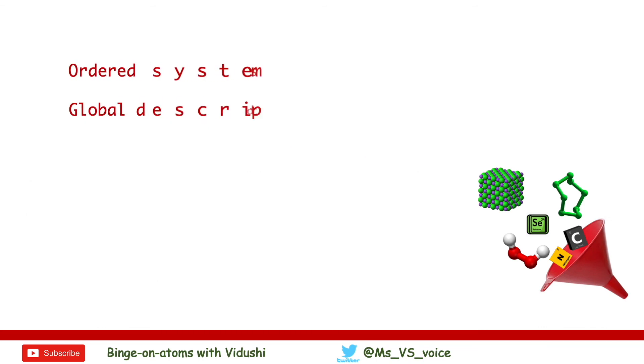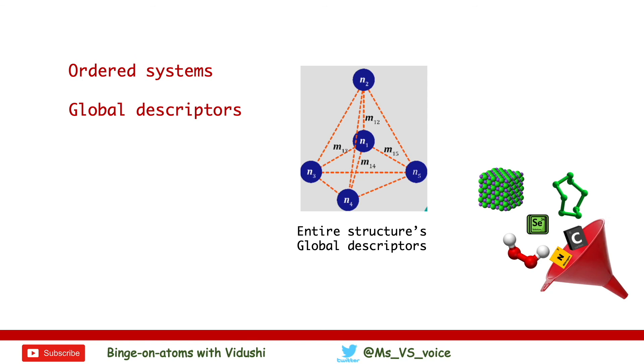Now what is common feature in all these methods? These methods are suitable mostly for ordered systems, crystalline systems. And secondly, these are all global descriptors. These descriptors represent the entire structure as a whole.